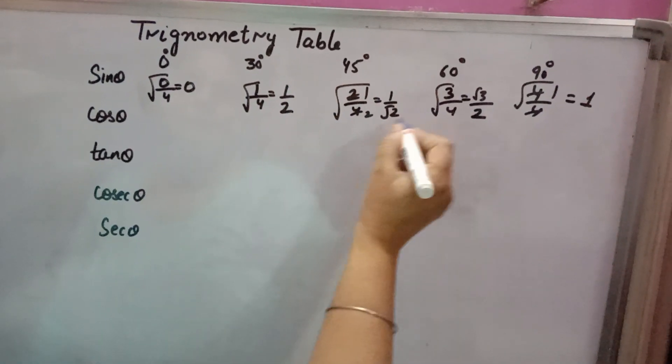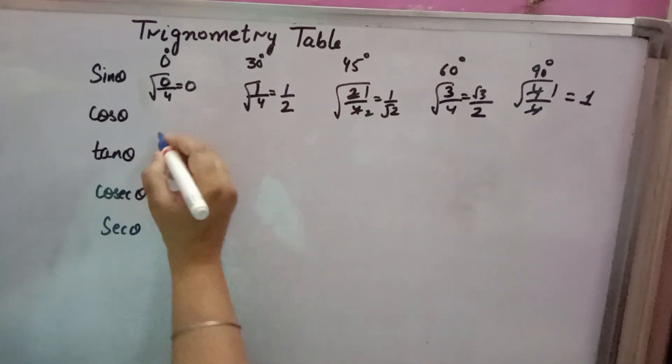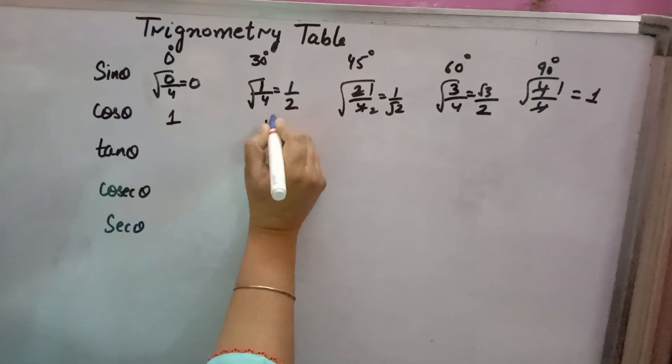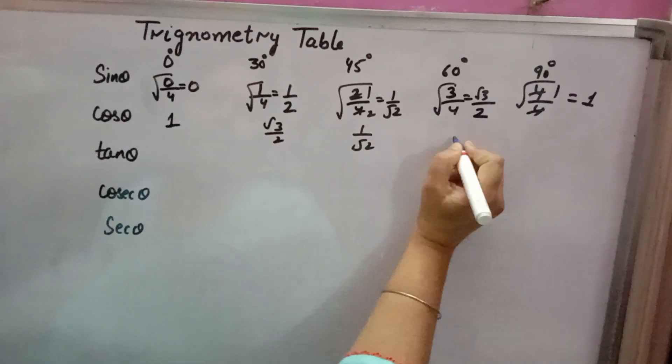0, half, 1 by root 2, root 3 by 2. For cosine theta, reverse these values, you'll get 1, then root 3 by 2, 1 by root 2, half, and 0.